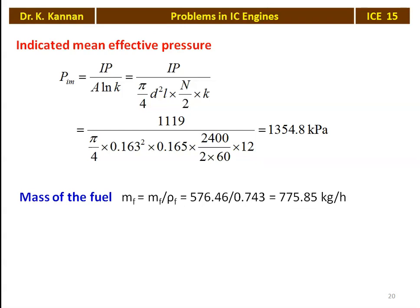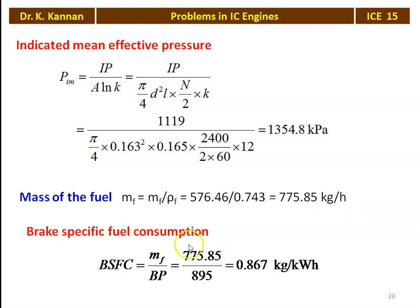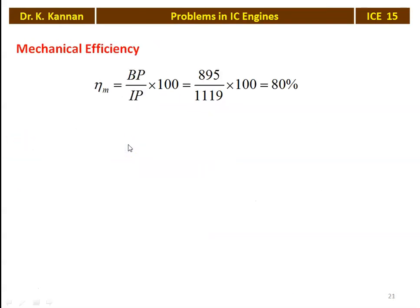Mass of fuel is given in liters per hour, so we convert to kg/hr: 576.4 × 0.743 = 775.85 kg/hr. Brake specific fuel consumption BSFC = mass of fuel / brake power = 775.85 / 895 = 0.867 kg/kWh. Mechanical efficiency η_mech = brake power / indicated power × 100 = 895 / 1119 × 100 = 80%.